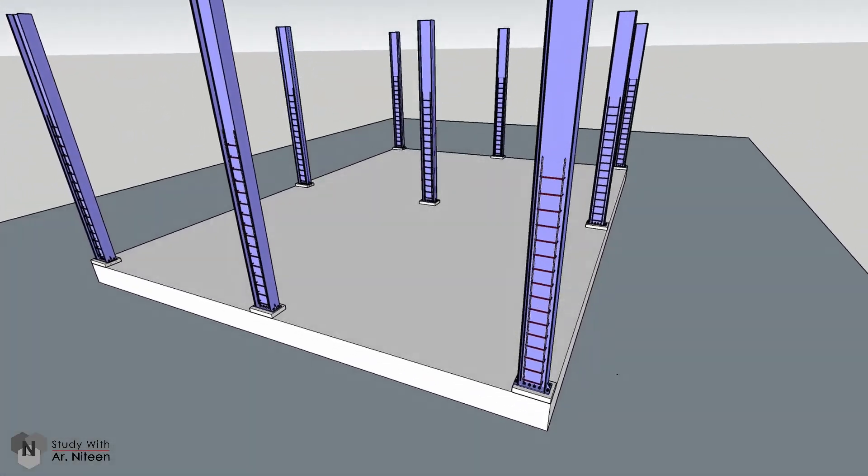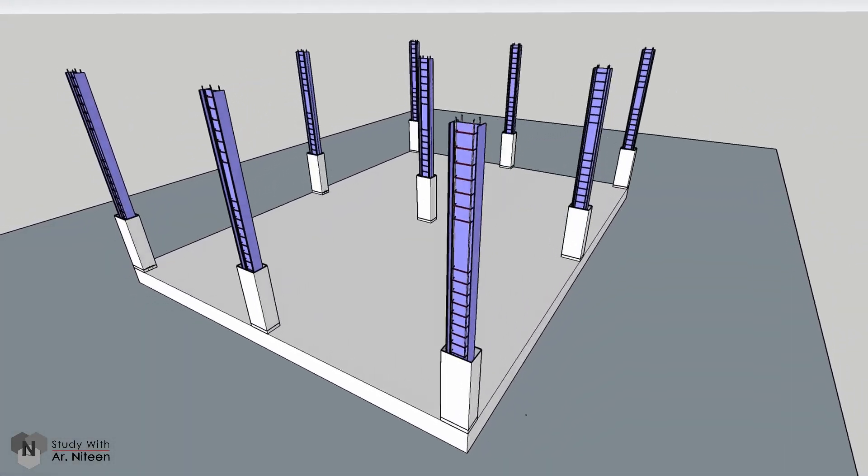The columns are bolted at the plinth level above the RCC stub columns. These can be encased in situ.